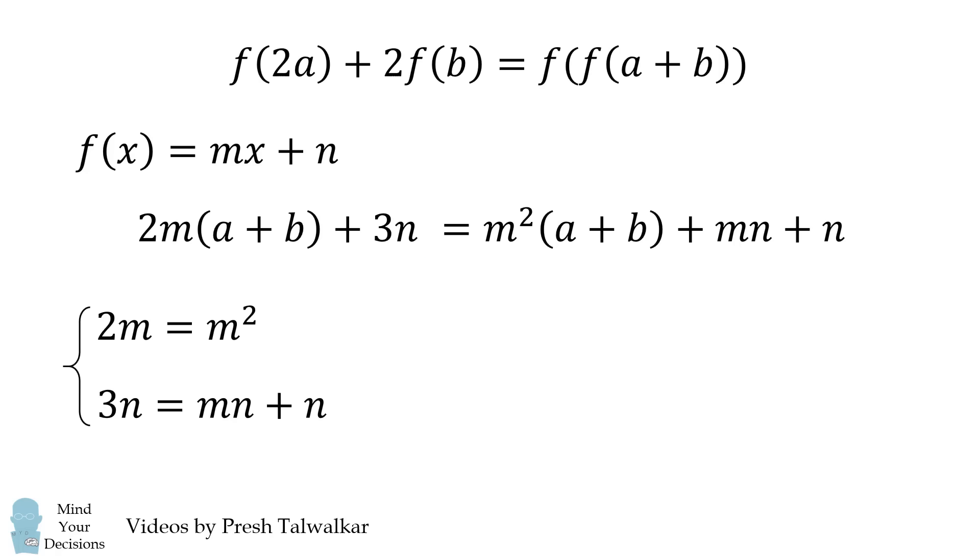We have a system of equations. We're going to solve this by considering each case. So how do we solve 2M is equal to M squared? Well one solution is M is equal to 0. We're going to substitute that into our second equation. We have 3N is equal to N and that's only true if N is equal to 0.